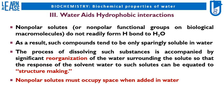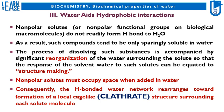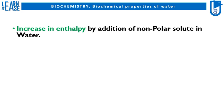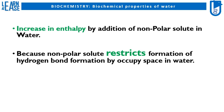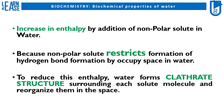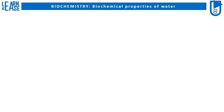Nonpolar solutes must occupy space when added in water. Consequently, the H-bonded water network rearranges toward formation of a local cage-like clathrate structure surrounding each solute molecule. Increase in enthalpy by addition of nonpolar solute in water occurs because nonpolar solute restricts hydrogen bond formation by occupying space in water. To reduce this enthalpy, water forms clathrate structure surrounding each solute molecule and reorganizes them in the space.